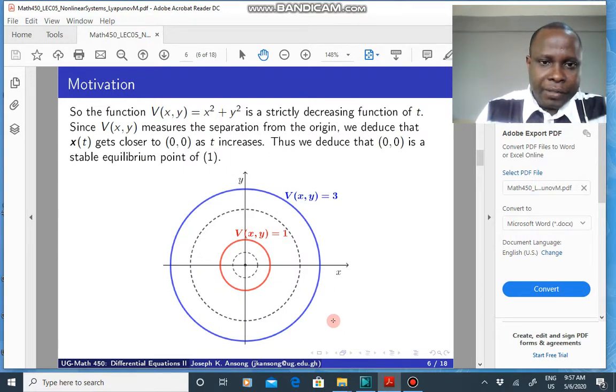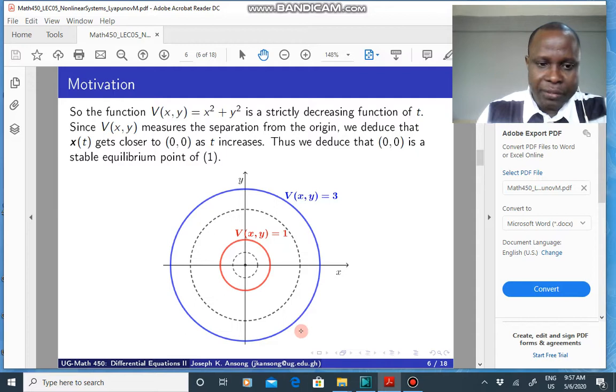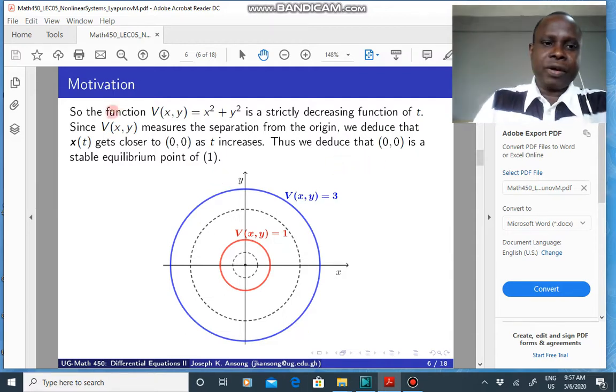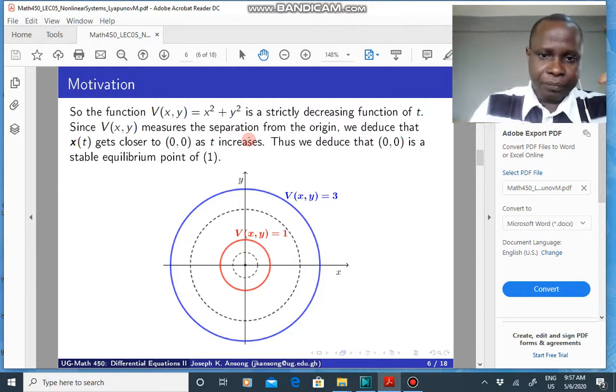Now, you see that that also means that it is a strictly decreasing function. The fact that this is less than zero means that it is a decreasing function. And because of the fact that the function V, that is, this combination x squared plus y squared basically measures separation from the origin.